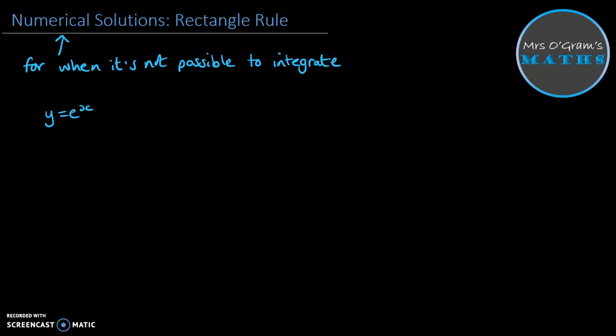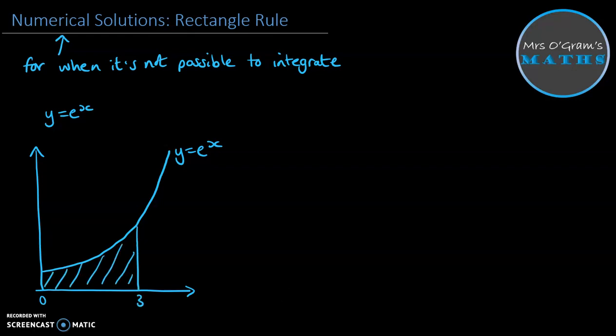Now, if our function is equal to y, then we get a picture like this. So we've got the graph of y equals e to the x. And say we want to estimate the area under the graph between 0 and 3. So we want to estimate this area here.